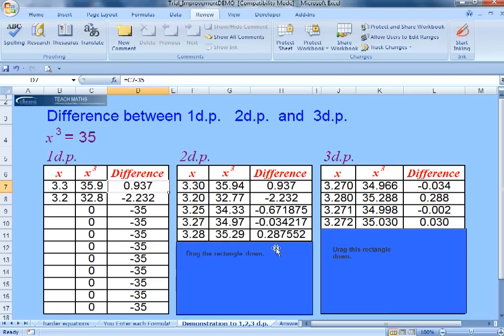But to two decimal places that's below, that's above, it looks like it's going to be 3.27 and then we could zoom in and get even more accurate and in which case we'd probably want in this case 3.271.